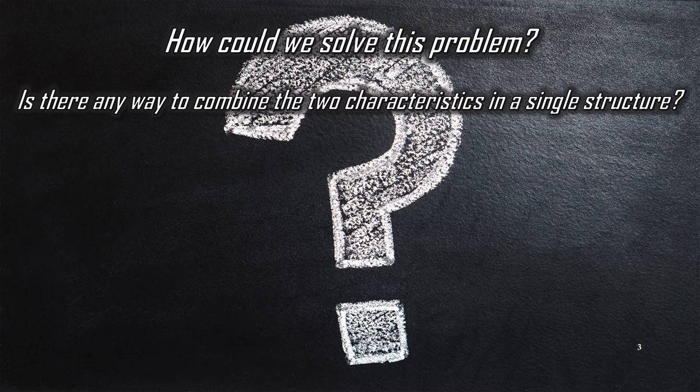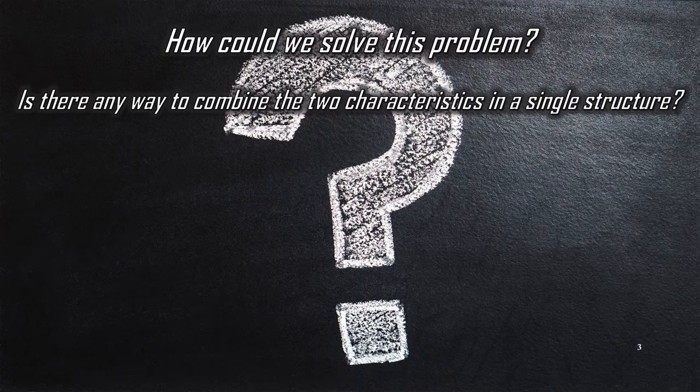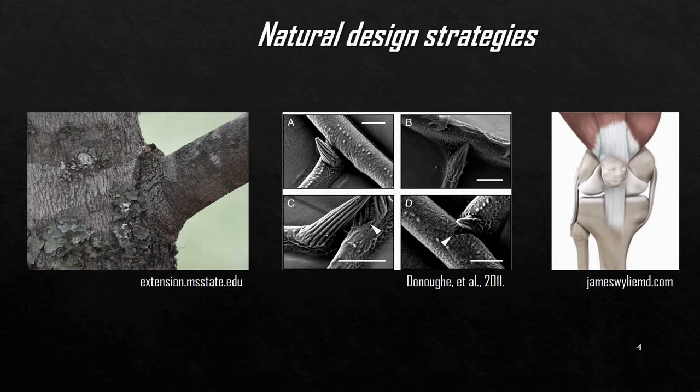How could we solve this problem then? Is there any way to combine the two characteristics in a single structure? Actually, nature provides us with plenty of design strategies through which many biological structures have achieved a balance between the two characteristics.